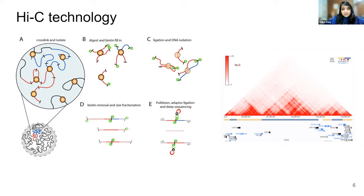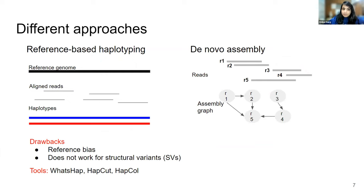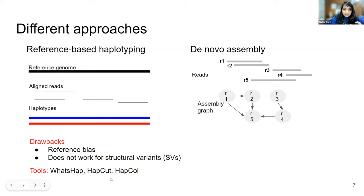Once we have these new data types, how can we leverage this information to get a fully phased genome and compare those genomes for biological applications? Traditionally, there have been various approaches to phasing. One is reference-based phasing — you start with a reference genome, align the reads, and phase them to get haplotypes. The drawbacks are reference bias and inability to handle structural variations important for biological applications. Tools for reference-based phasing include WhatsHap, HapCUT, and many more.